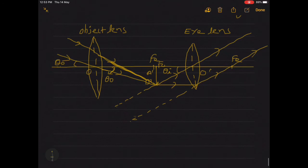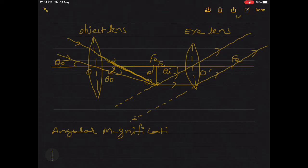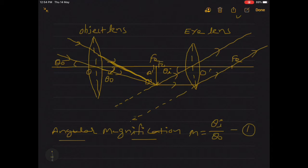The part left is angular magnification. To find angular magnification, we will use the formula: m is equal to theta_i upon theta_o. Here theta_i is the angle made by the image formed at infinity, and theta_o is the angle made by the object placed at infinity and seen directly.